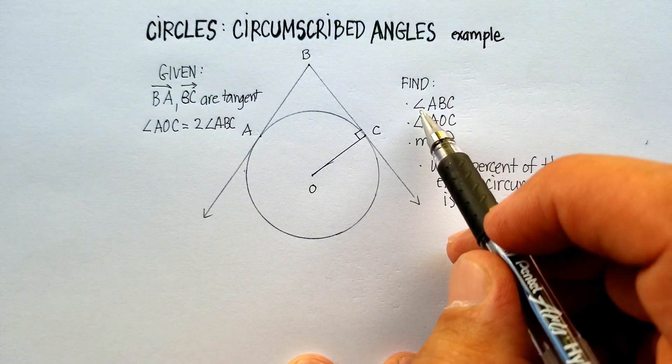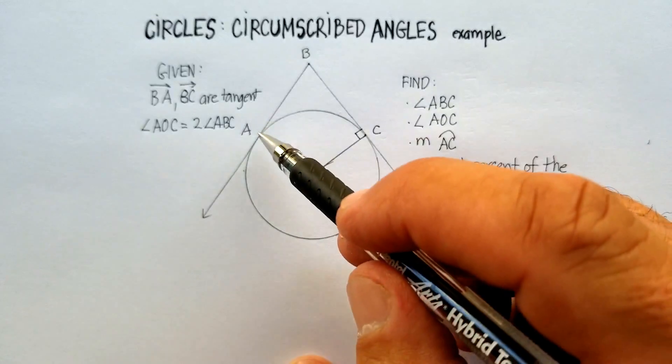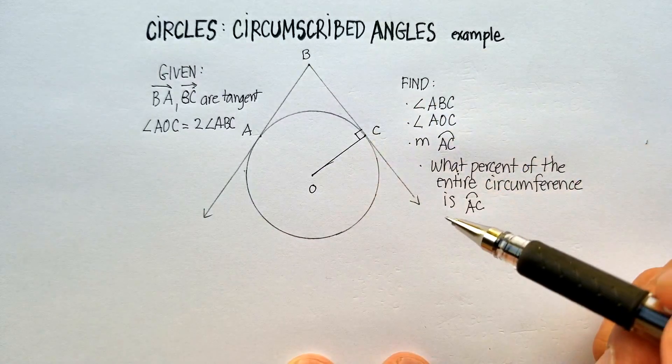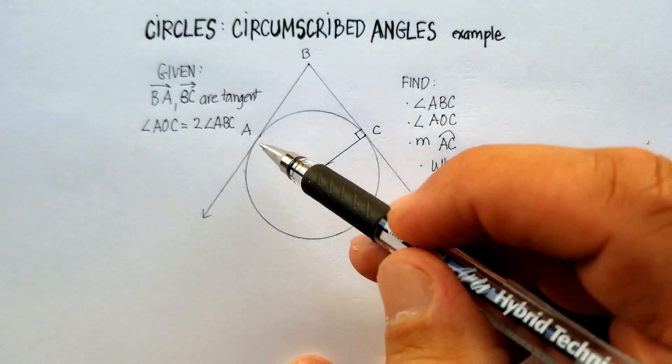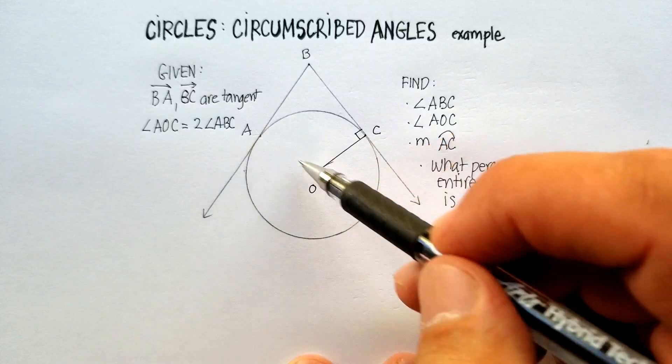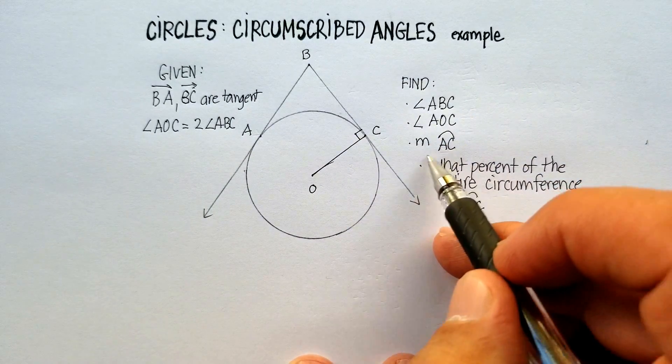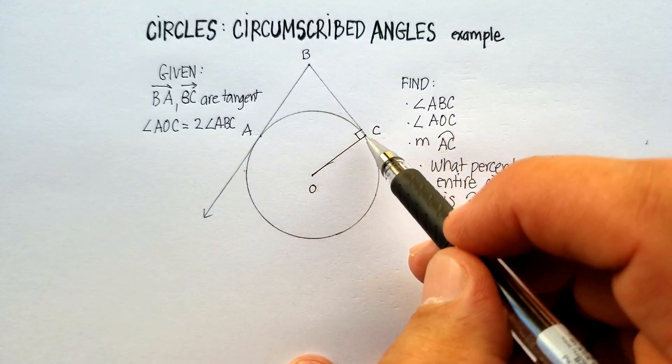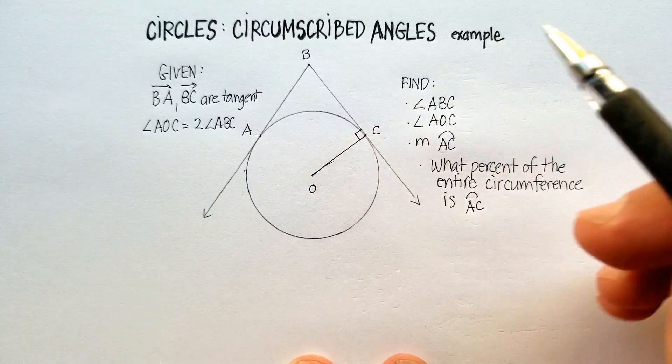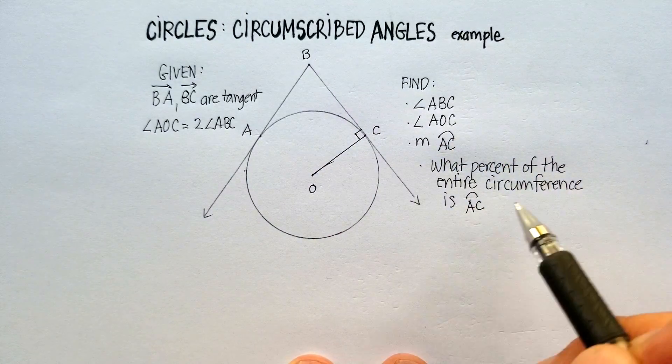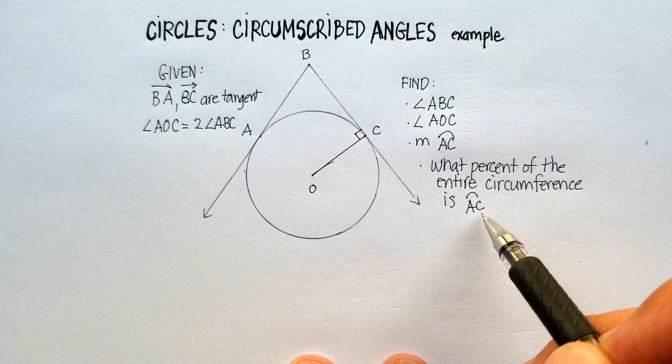We're trying to find the measure of angle ABC. We're trying to find the measure of angle AOC. I'll draw that in here in a second. We're trying to find the measure of arc AC. And then we're trying to find out what percent of the entire circumference is arc AC.